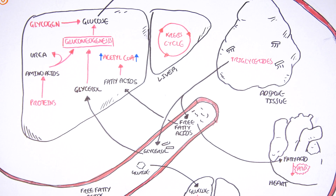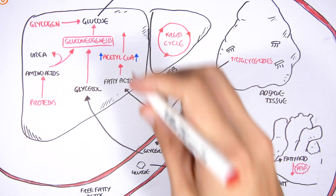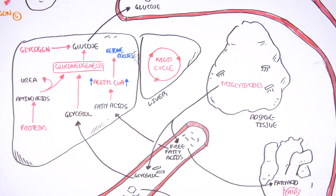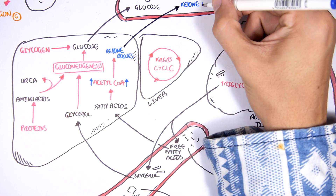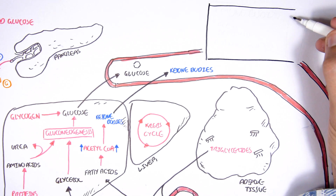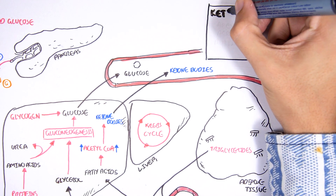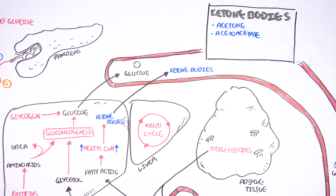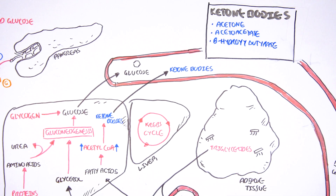Acetyl-CoA cannot be converted to pyruvate and then to glucose, as no such enzyme exists. Instead, the acetyl-CoA participates in ketogenesis — the synthesis of ketone bodies. Ketone bodies are molecules with a ketone group and can be used as a source of energy during prolonged fasting. There are three main types produced by the liver: acetone, acetoacetate, and beta-hydroxybutyrate, with beta-hydroxybutyrate being the main one produced.